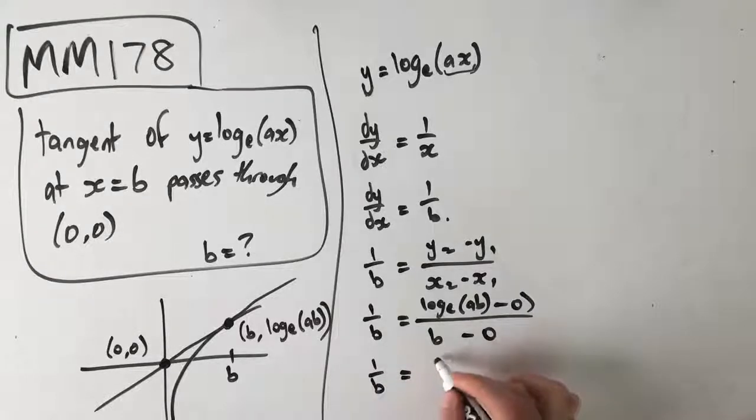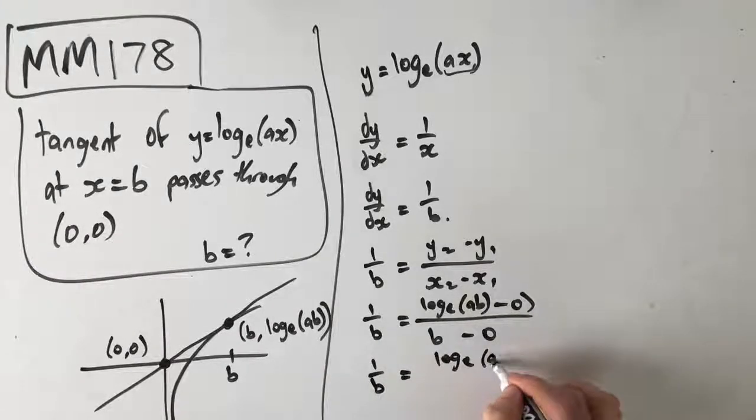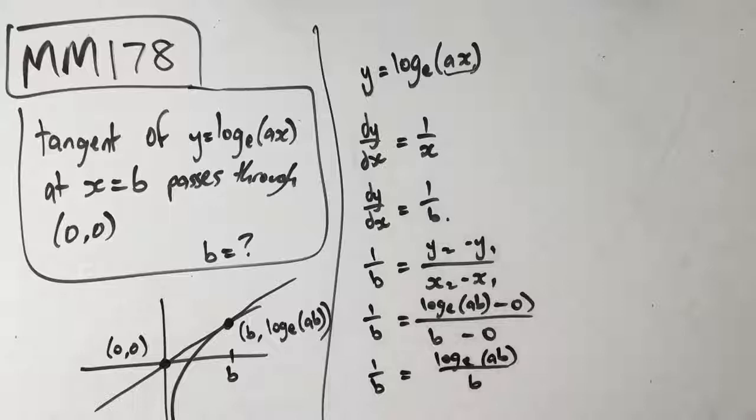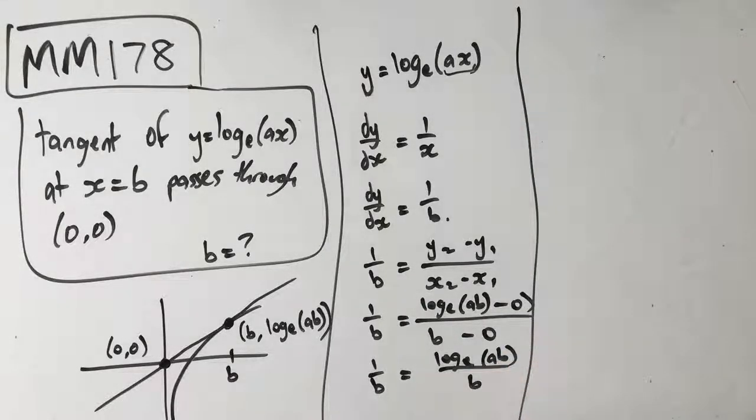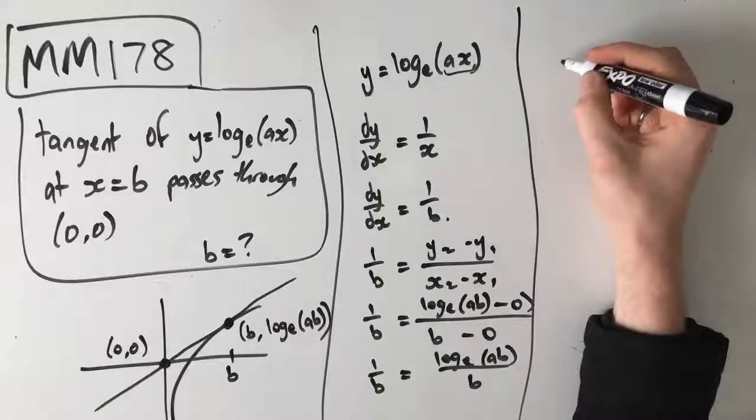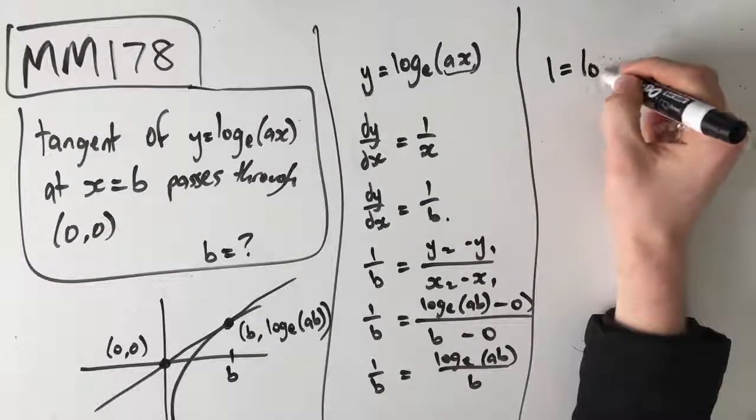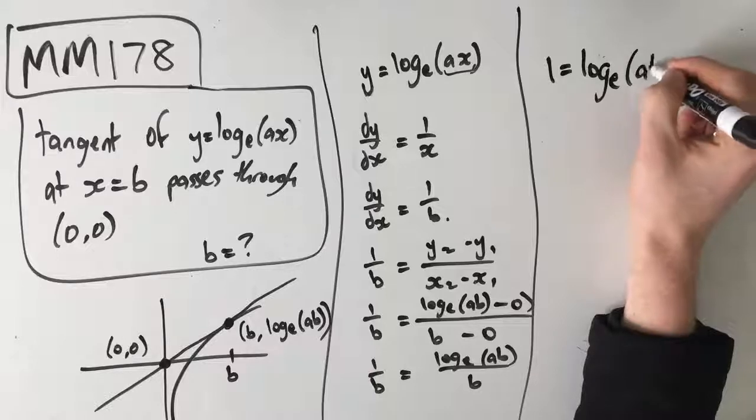From here, we get 1 over b is equal to log_e(ab) over b. Because these are both over b, we can multiply both sides by b and cancel them out, which means that we get 1 is equal to log_e(ab).